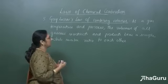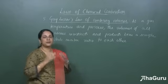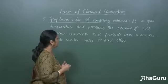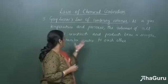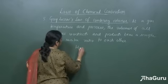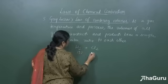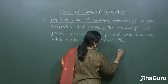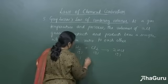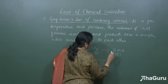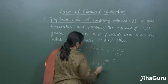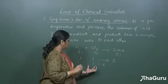The next law is Gay-Lussac's law of combining volumes. This law is applicable only for gaseous reactants and products. It states that at a given temperature and pressure, the volumes of all gaseous reactants and products bear a simple whole number ratio to each other. For example, hydrogen and chlorine in the gaseous state give 2HCl. 1 mole of H₂ reacts with 1 mole of Cl₂ to give 2 moles of HCl — the volume ratio is 1 to 1 to 2, a simple whole number ratio.